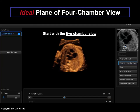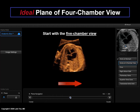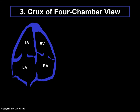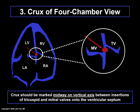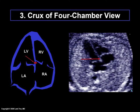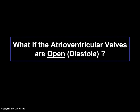Here is an example of finding the ideal plane of the four-chamber view. We always recommend starting from the five-chamber view and then scrolling caudally by moving the scroll button to the right. Normally, the atrioventricular valves are offset — the tricuspid valve annulus inserts slightly more apically on the ventricular septum than the mitral valve. The crux should be marked midway on a vertical axis between the insertions of the tricuspid and mitral valves onto the ventricular septum. FINE recognizes the cardiac phase and will automatically close the atrioventricular valves so the user can mark the crux.